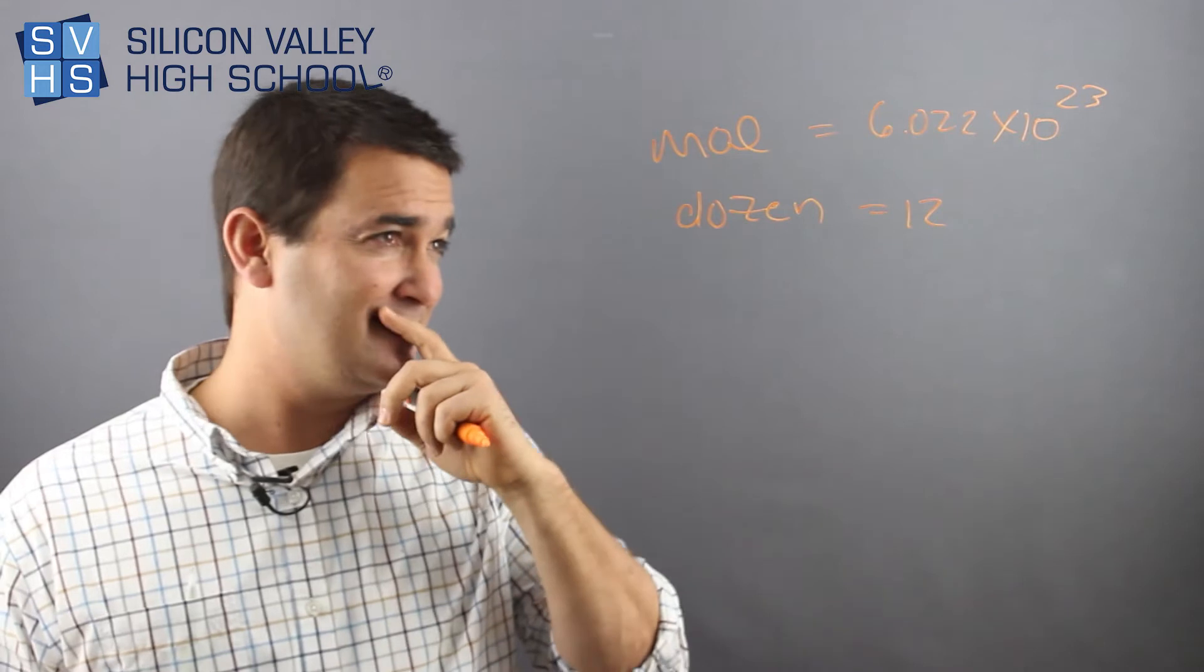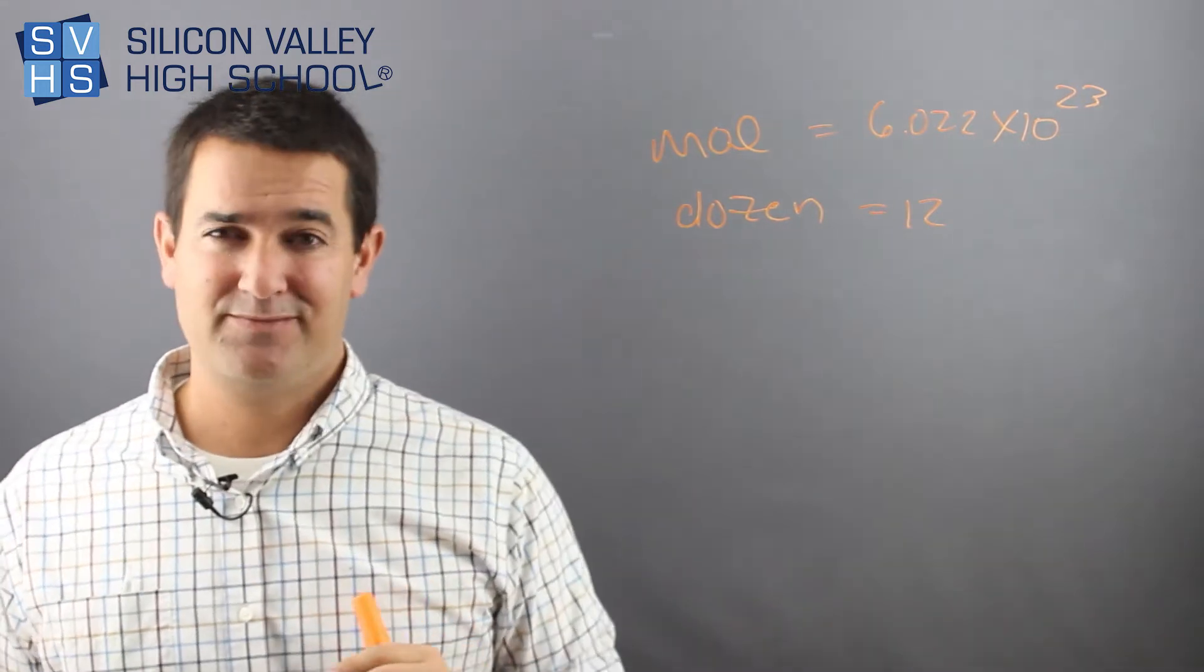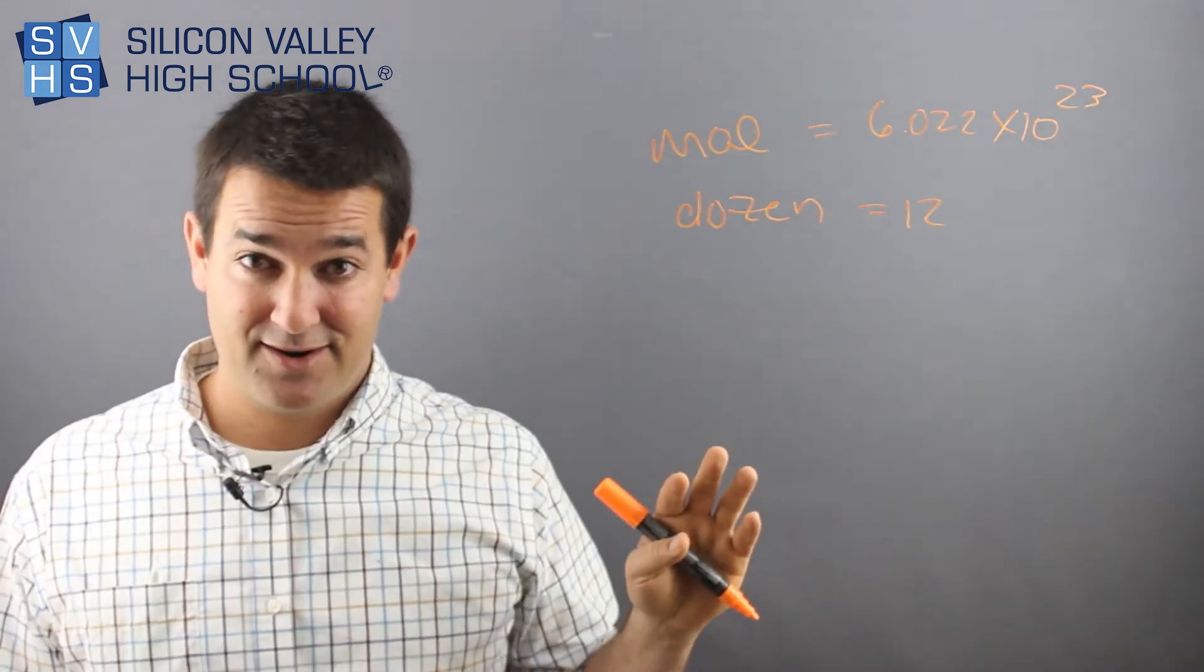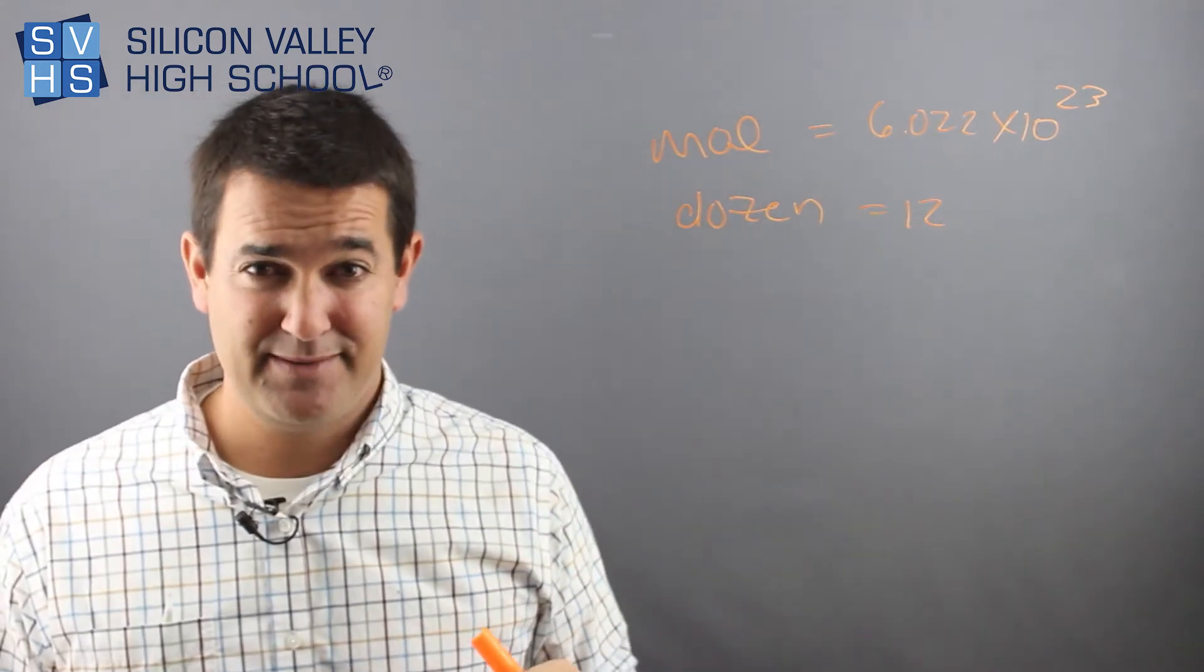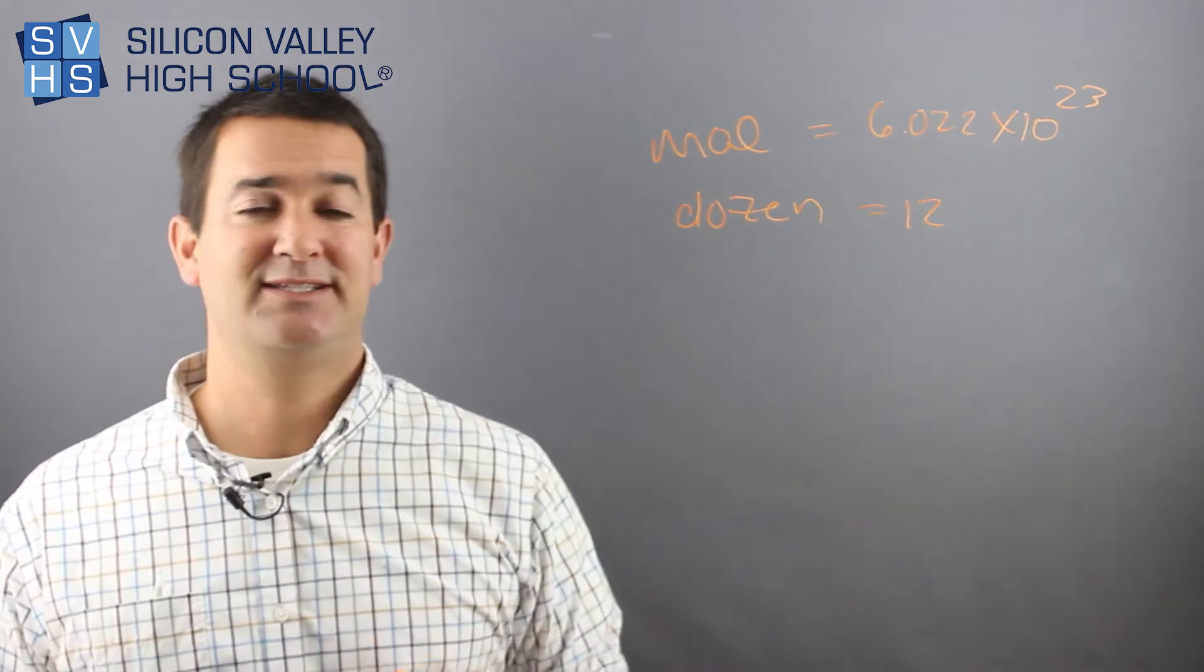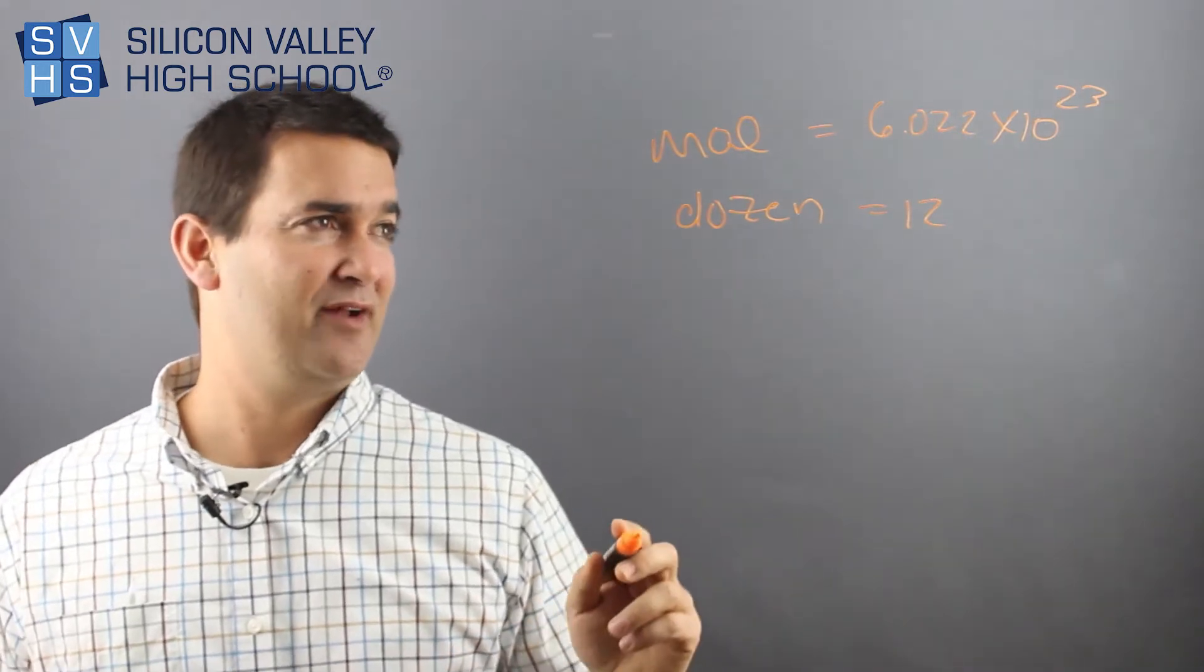And I think the reason they didn't do a dozen is because, obviously, molecules are pretty small, as far as I heard, and atoms are pretty small. So, typically, if you have a pinch of them, it's a pretty big number. And so they're going to stick with this as a kind of a big lump.